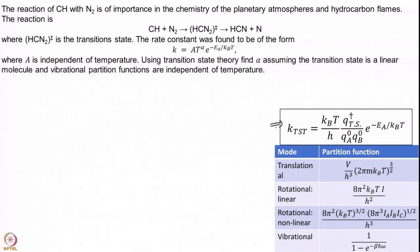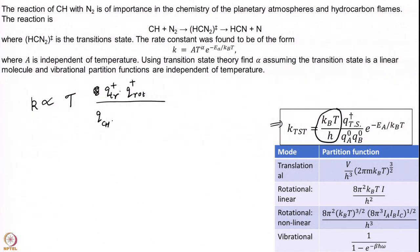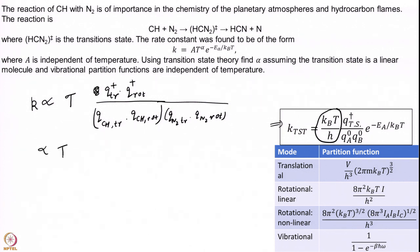We are going to use the TST rate formula and look only at the temperature dependence. I have a factor of T from the prefactor, then Q of the transition state divided by Q of CH and Q of N₂. The transition state Q includes Q translational times Q rotational. I have gotten rid of the vibrational and electronic parts.